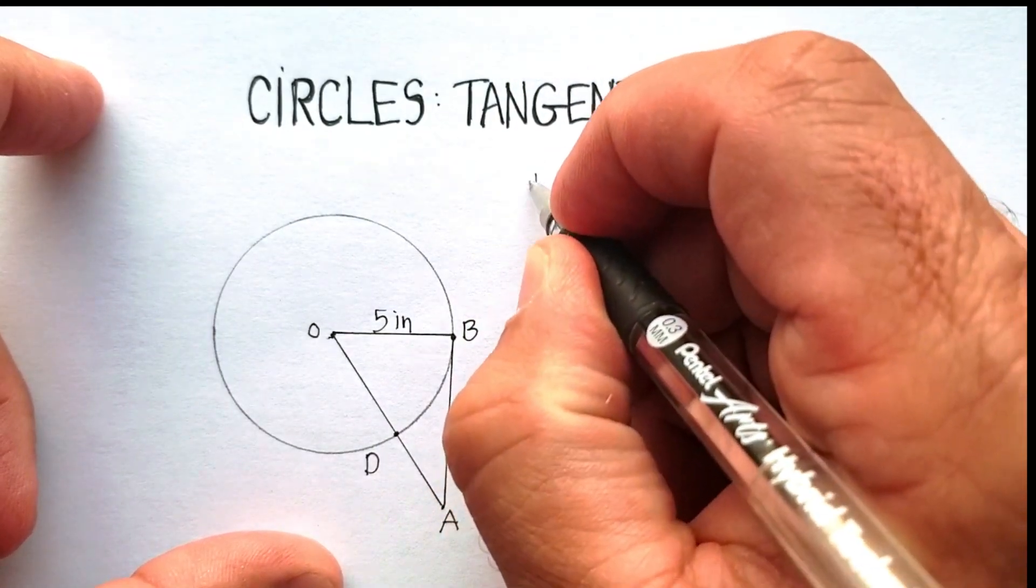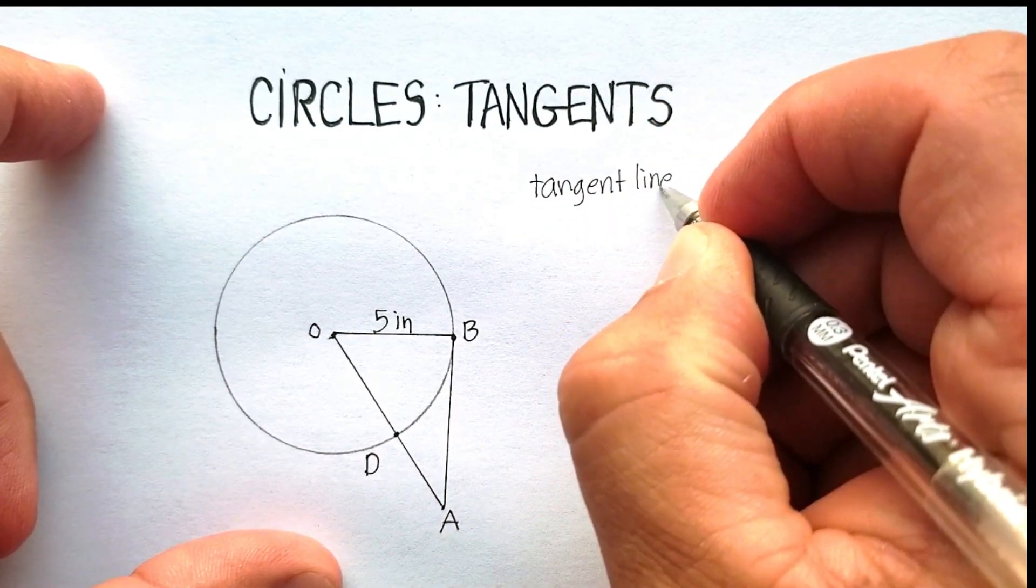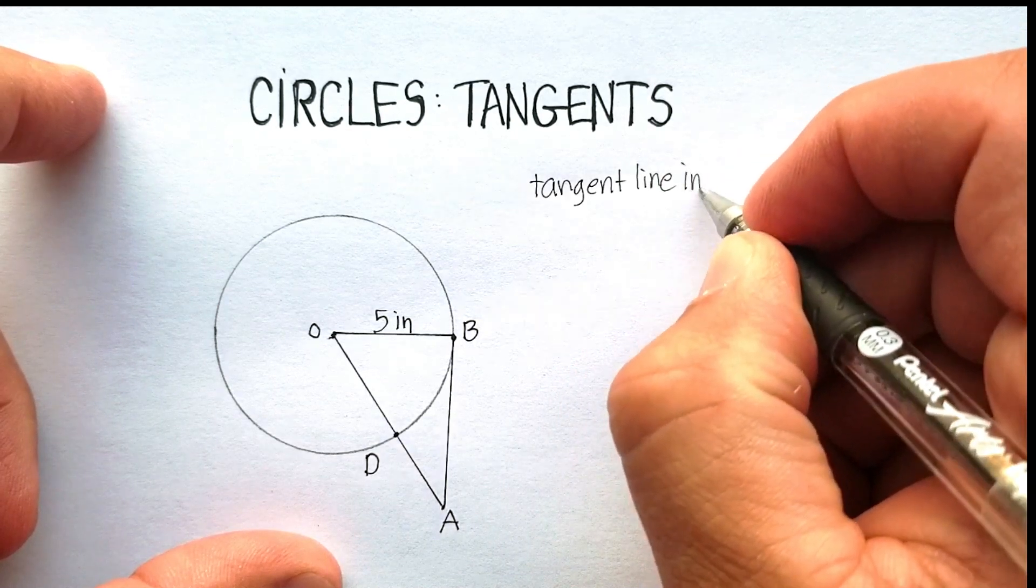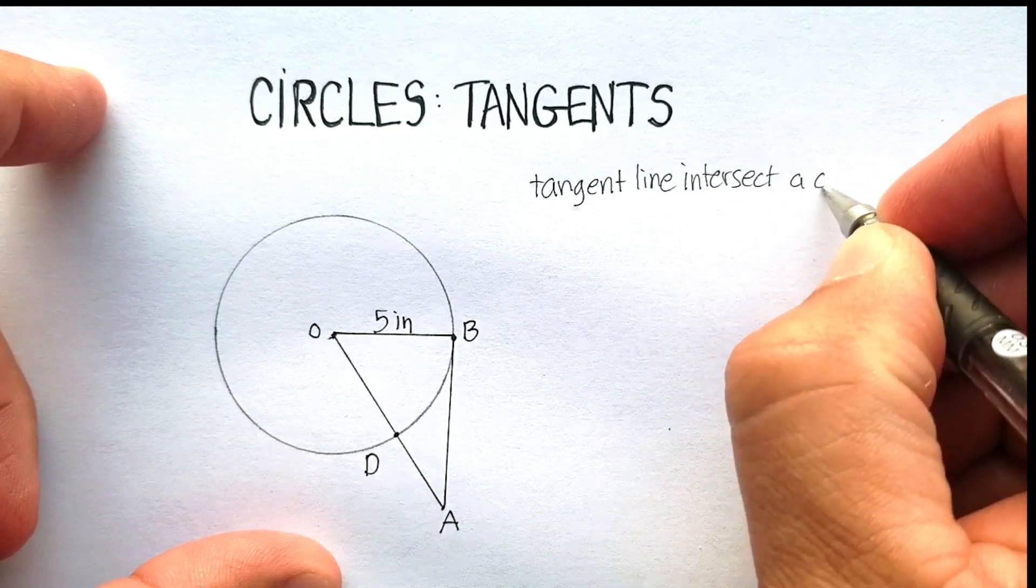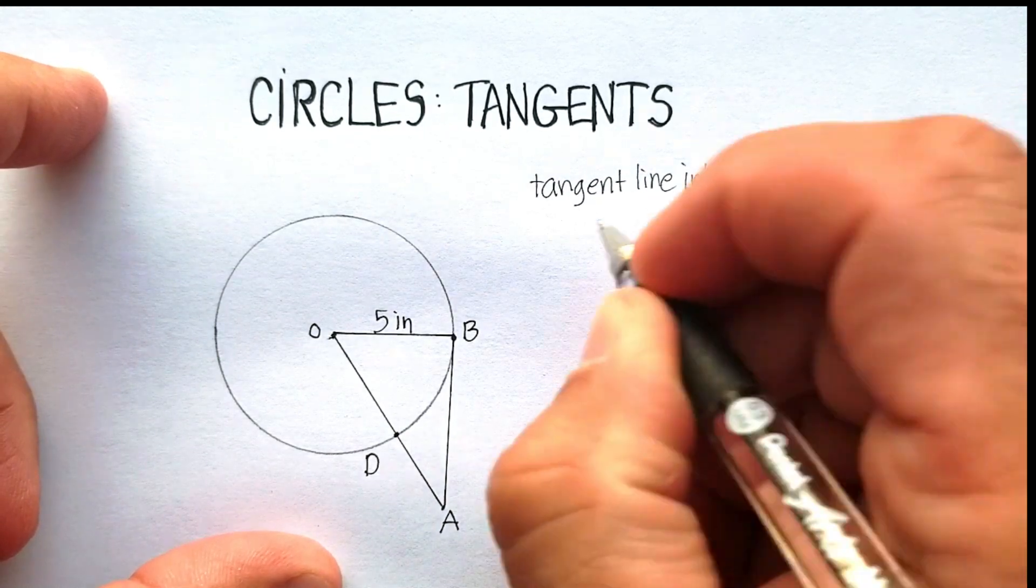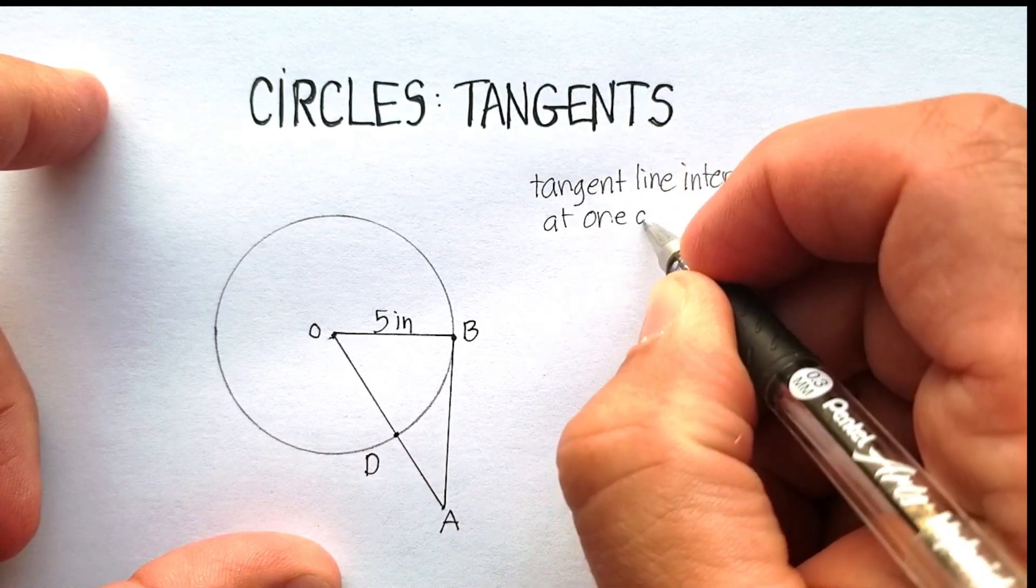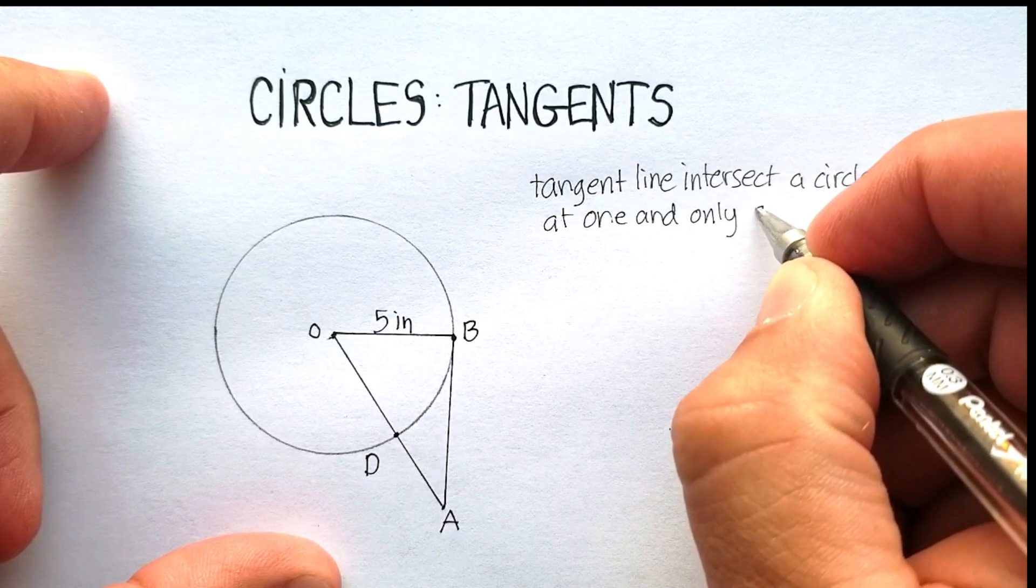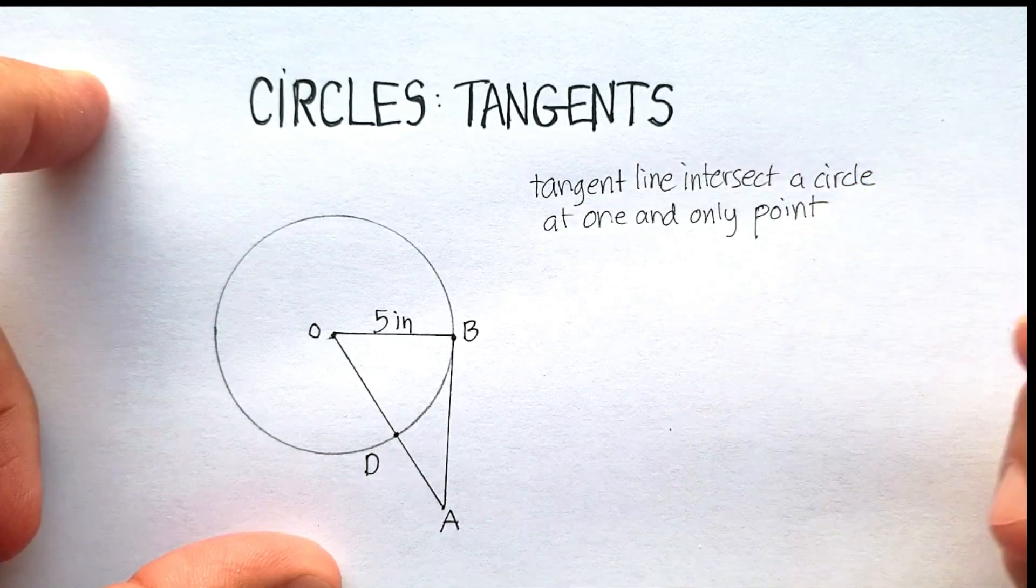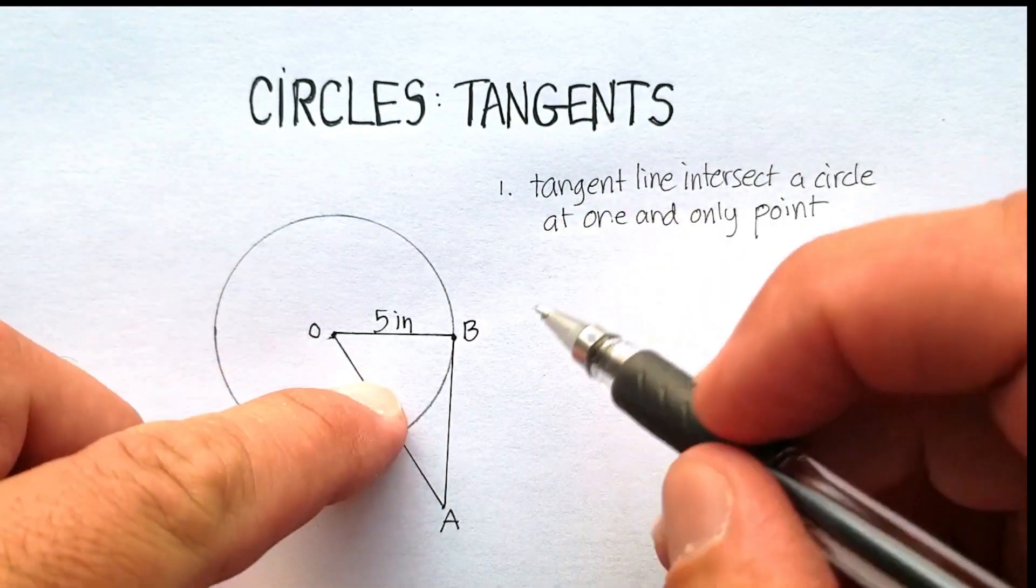In this case, it would be point B. Okay, so again, tangent lines intercept a circle at one and only one point. So that's one of the properties, or one of the definitions if you want, of a tangent line.